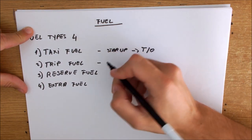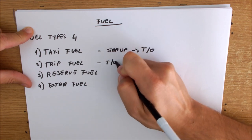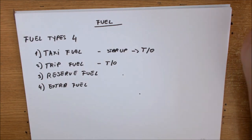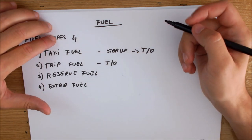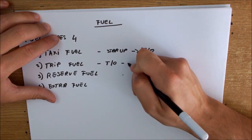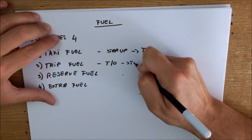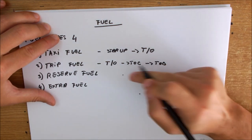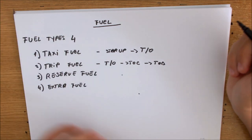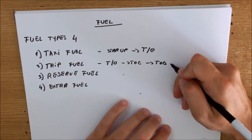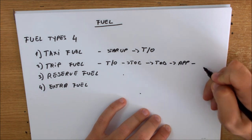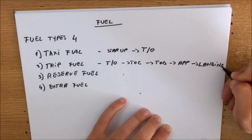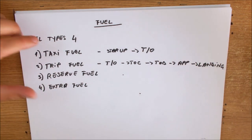Then we have the trip fuel. The trip fuel is the fuel from take-off with the expected routing. You always have to follow different SIDs depending on the airport you're flying out of. The trip fuel covers take-off to top of climb, top of climb to top of descent — the entire cruise segment — then top of descent to approach, and approach to landing.